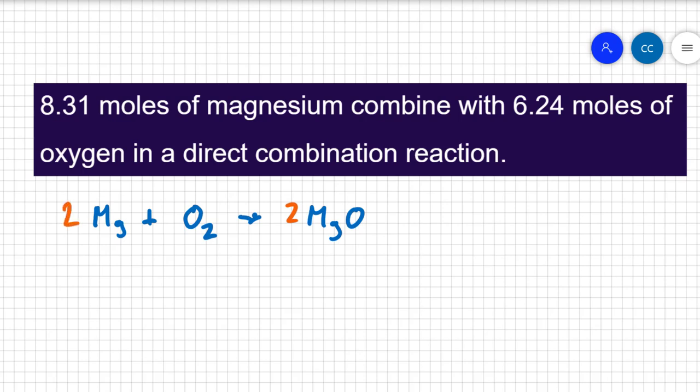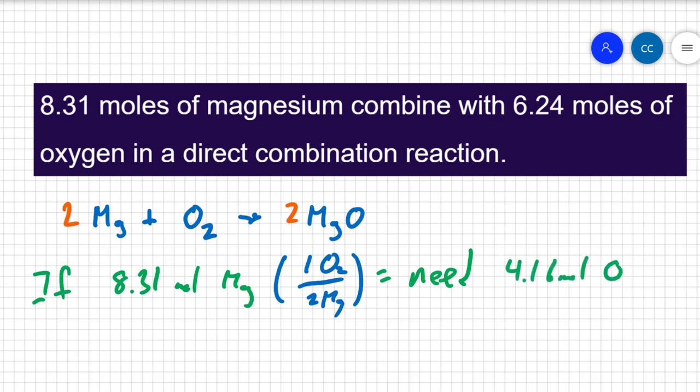The reaction says that for every two moles of magnesium, I need one mole of oxygen. So let me ask you a question. If I have 8.31 moles of magnesium, the amount that I'm given, how much oxygen do I actually need? Well, from our balanced equation, there's 1 O2 for every two magnesiums, as long as we're in moles. So what this statement is saying is that you need 4.16 moles of oxygen. Do I have 4.16 moles of oxygen?